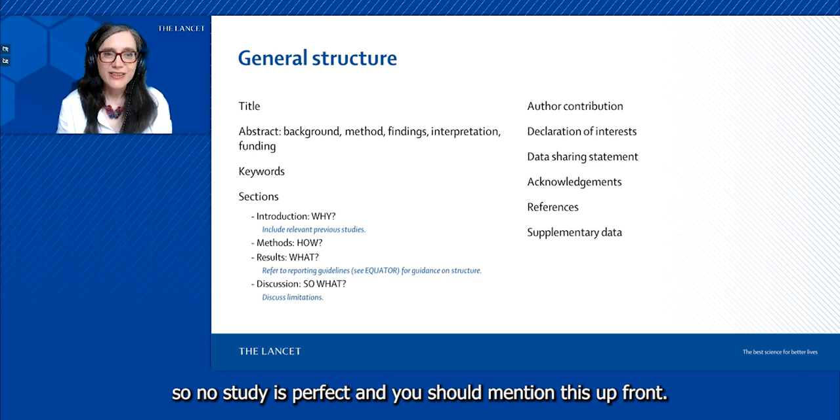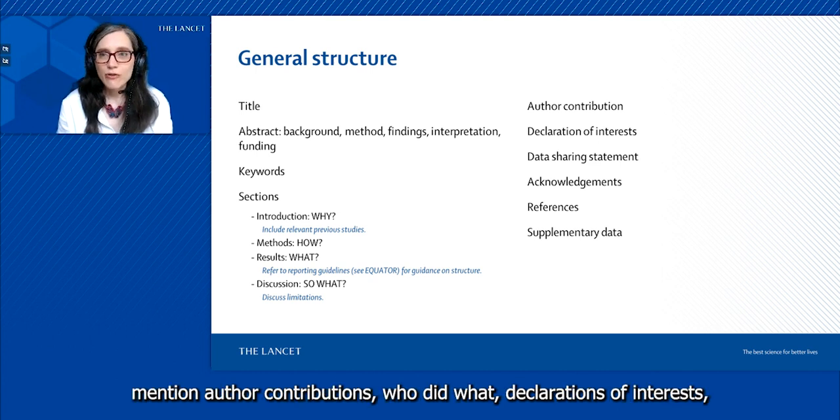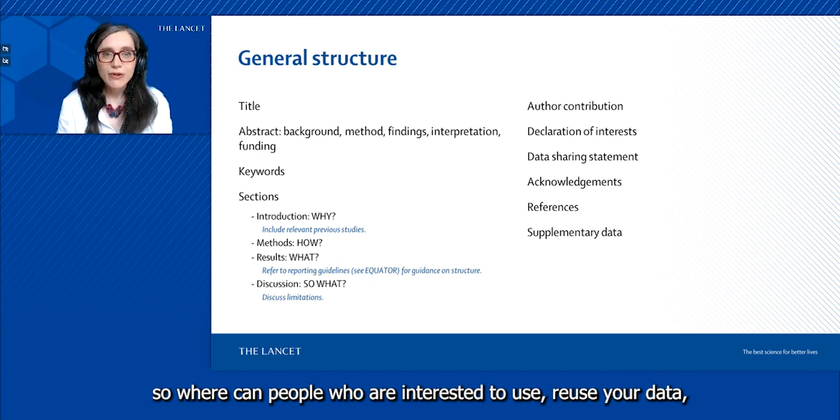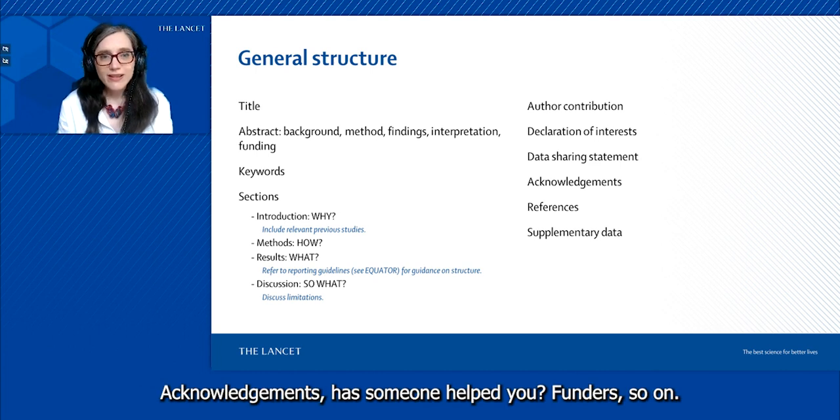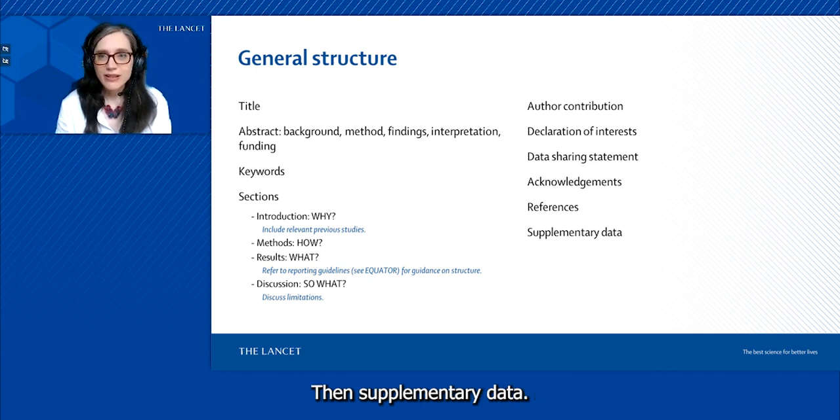No study is perfect and you should mention this upfront. Then there are some additional sections where you mention author contributions, who did what, declarations of interest—very important so that you're transparent—data sharing, so where can people who are interested reuse your data, how can they find that, do you have any sequences deposited somewhere, acknowledgements, has someone helped you, funders and so on, references, where can people find the literature, and then supplementary data.